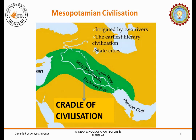Coming to the Mesopotamian civilization — it is located in modern day Iraq, irrigated by two rivers, Tigris in the east and Euphrates in the west. It is known to be the earliest literary civilization and to have consisted of city-states. For this reason, this region is also known as the cradle of civilization.